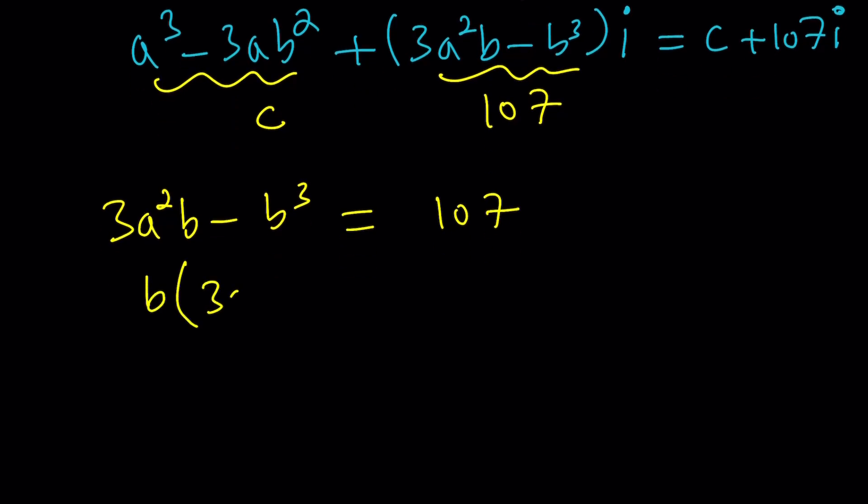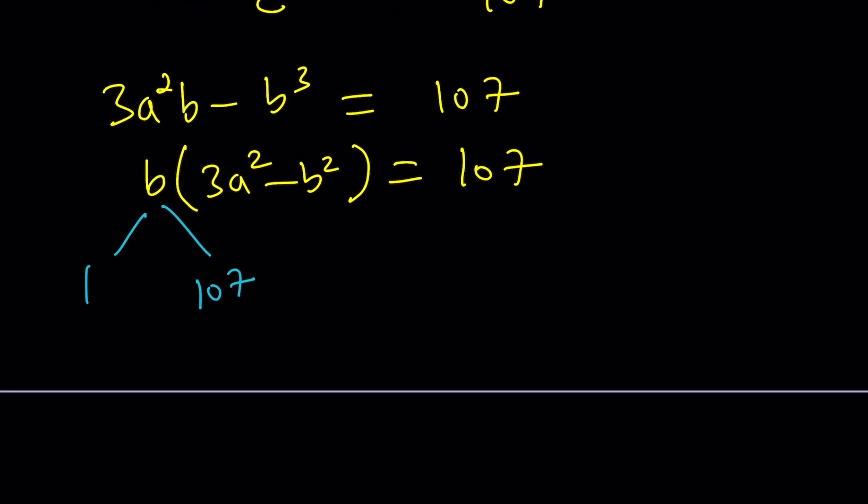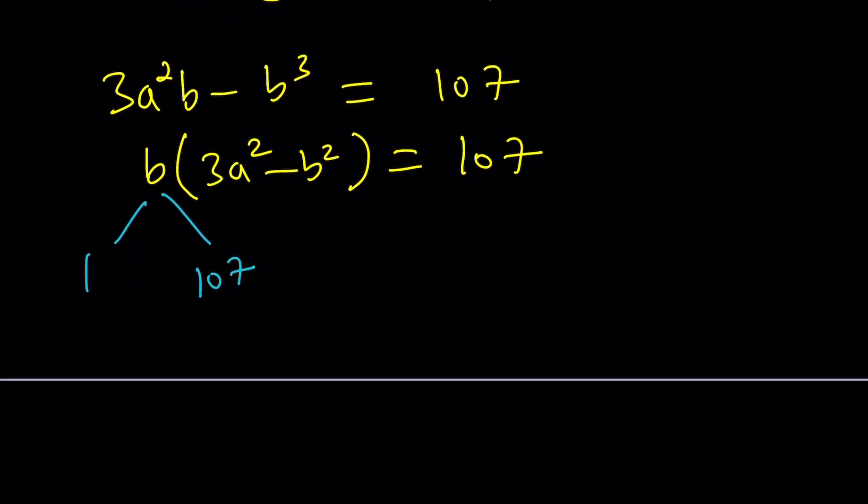Factor out B, 3A squared minus B squared equals 107. Since 107 is prime, we have limited options. B can be 1 or 107, right? Because a prime number has two factors. And when I say factors, I'm talking about positive factors. I'm not considering negative 1 and negative 107. So, because ABC are positive anyways, let's look at each case.